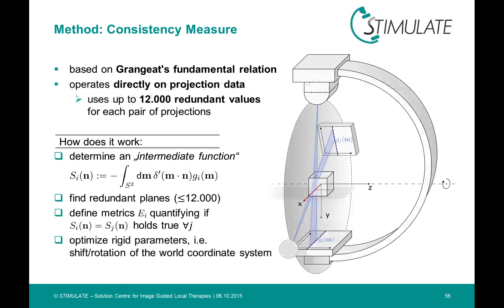With a so-defined measure, we've got an objective function, which is implicitly dependent from the geometry of the system. We can minimize this function by varying the rigid parameters of our object. Those are equal to the rotations and translations along the axis of the world coordinate system, as highlighted in red.